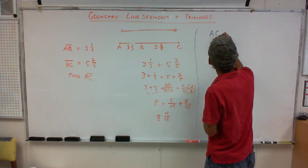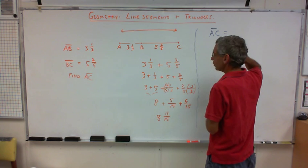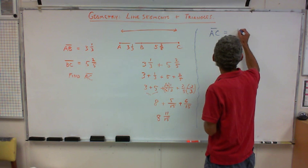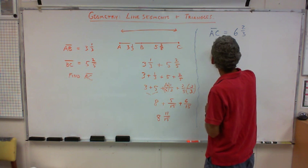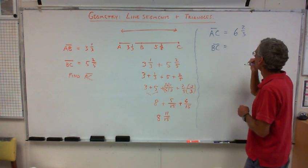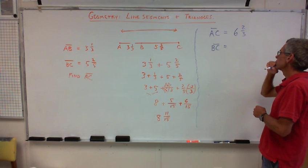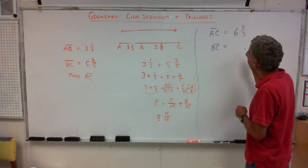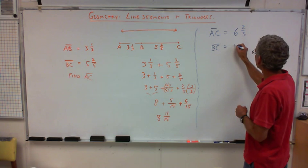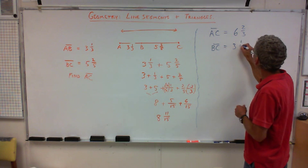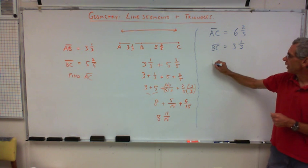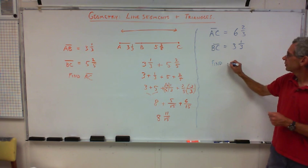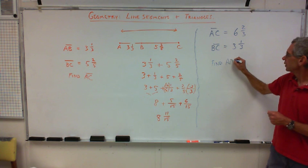Let's say I said AC, line segment AC was equal to six and two-thirds and line BC is equal to, I don't know, let's see, what is BC? Okay. So, say three and one-third. And then I said find A, B, line segment A, B.